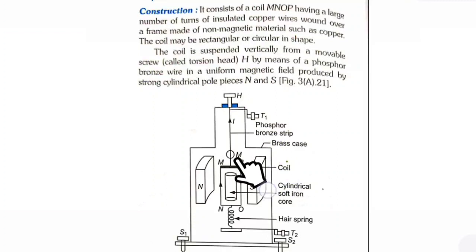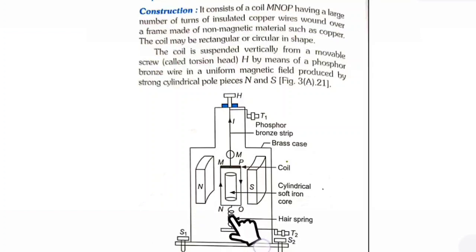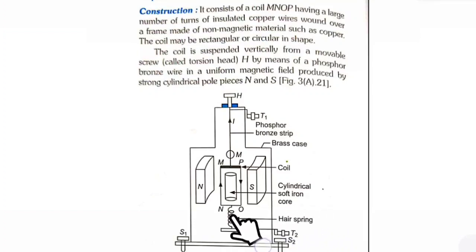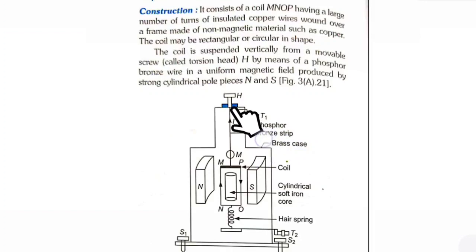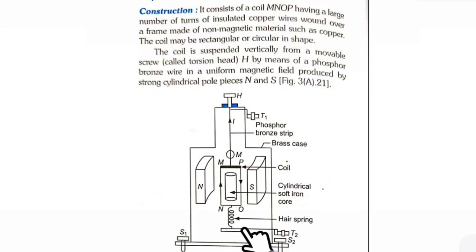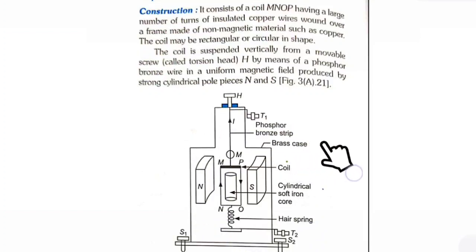There is a concave mirror M attached to the coil. At the bottom part there is a spring called a hair spring, which is very thin. This spring is also made of phosphor bronze. The other end of the spring is fixed to a terminal, and this entire structure is placed inside a box so that it is not disturbed by external air flow.